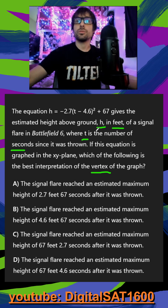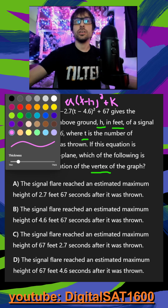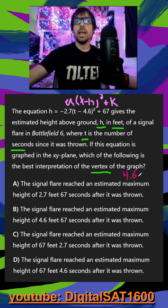This one's really convenient by hand because it's already in vertex form. Vertex form is going to be your a value times your x minus your h squared plus your k, with your h and your k being your vertex. Another way to think of it is whatever gets me zero in my parentheses is my x, so a positive 4.6. And then on the outside of the parentheses, your k is just straightforward, just 67 for my y.